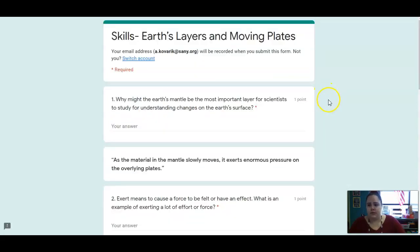All right, let's do some skills. Number one, why might the Earth's mantle be the most important layer for scientists to study for understanding changes on the Earth's surface? So remember, the mantle is below the crust, so underneath the crust. Why is it important to study what's going on underneath the outer crust?